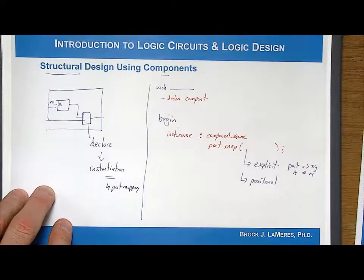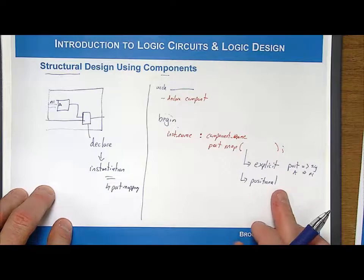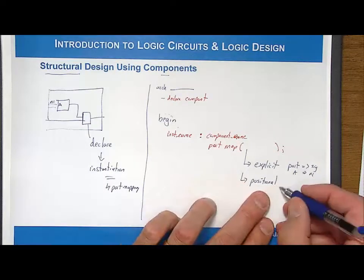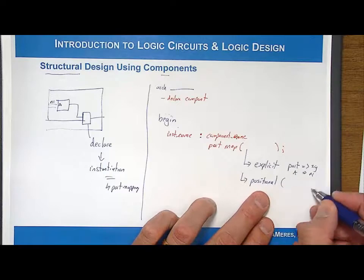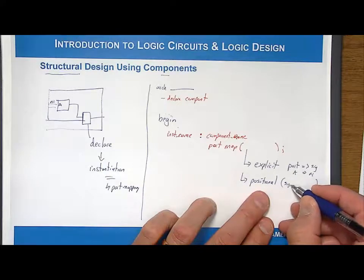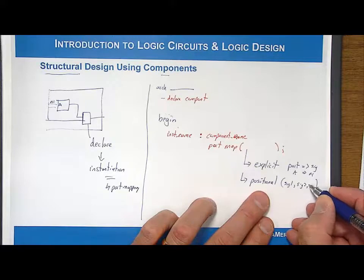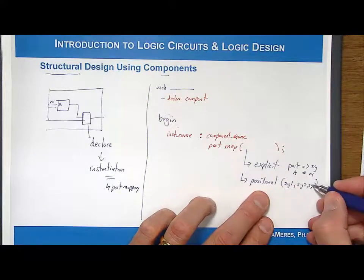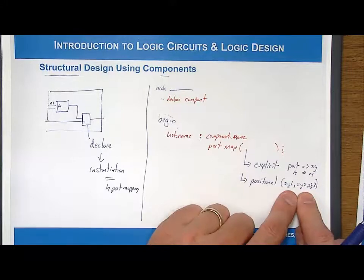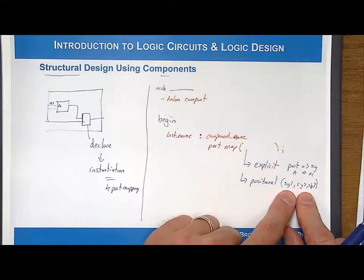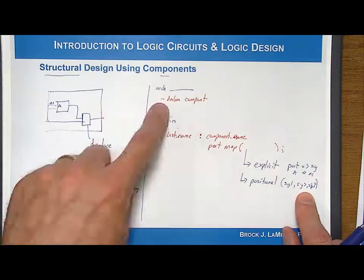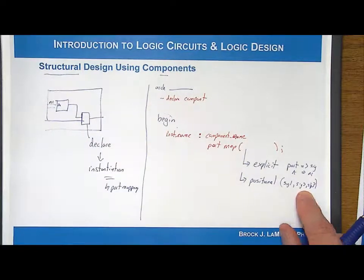Positional is where, depending on the way, the connections are made by simply listing out in order all of the signals in the top level, so sig1, sig2, sig3, and you list them all out in the order, and they're connected in the order that the ports were declared in the component declaration. So this one takes less syntax, but you've got to be careful of which order they're in.